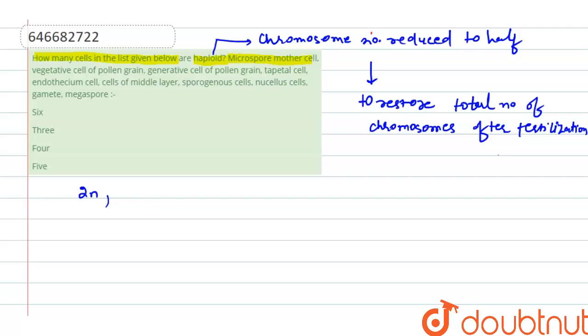contain the whole set which is 2n. Our next option is vegetative cell of pollen grains. When a pollen grain is formed, meiosis has happened. A microspore mother cell is divided into a pollen grain which will result in